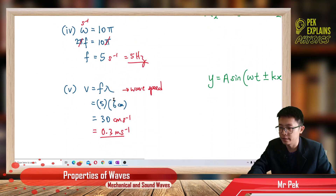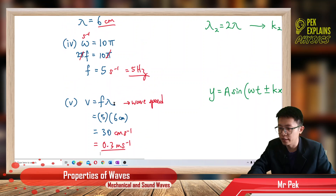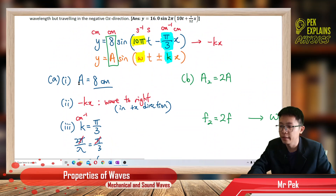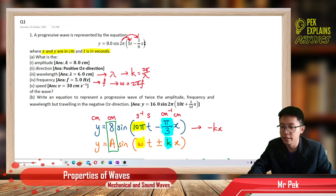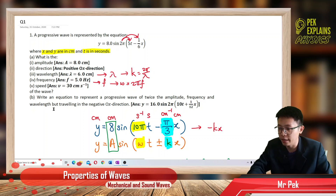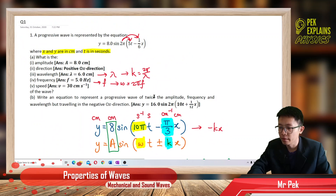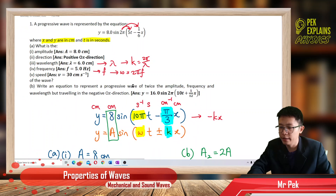From just one equation, I can find so many values: speed of the wave, frequency, wavelength, and amplitude. Now the next part asks us to write an equation for a progressive wave with twice the amplitude, frequency, and wavelength, but traveling in the negative x direction. First, we find all the new parameters for this new wave.